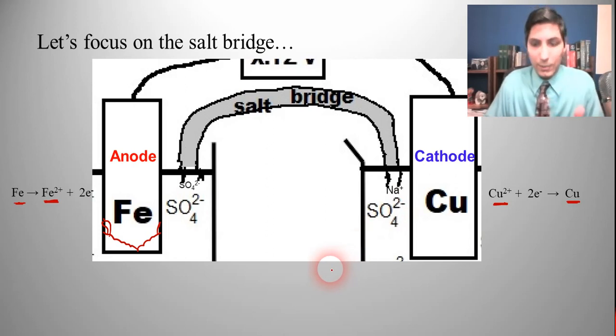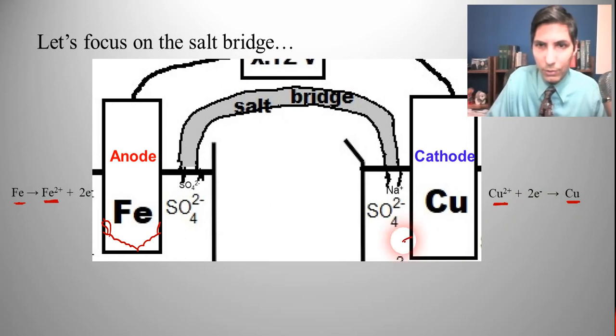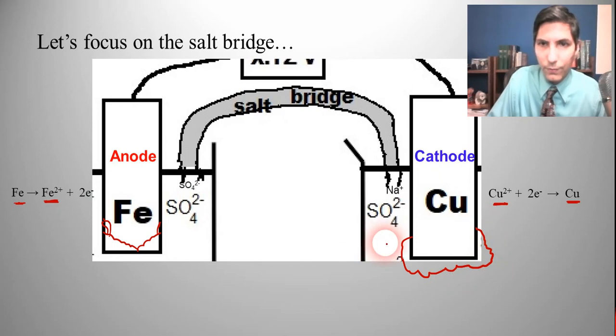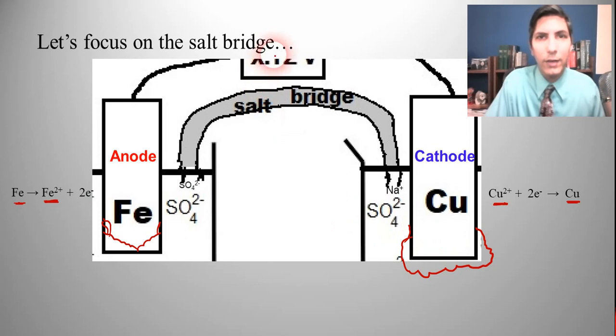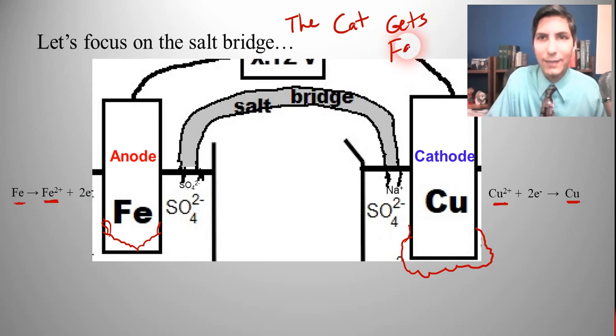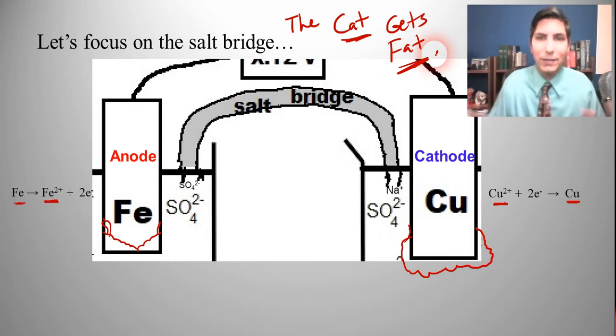And so as we can see here, the copper is being formed. So if we're going to look at this over time, the copper cathode is going to be getting larger. It's going to be increasing in mass. And so if you have trouble remembering that, you can just remember that the cat gets fat. Or in other words, the cathode is increasing in mass. The cat gets fat. And so the cathode will increase in mass while the anode is going to generally decrease in mass.